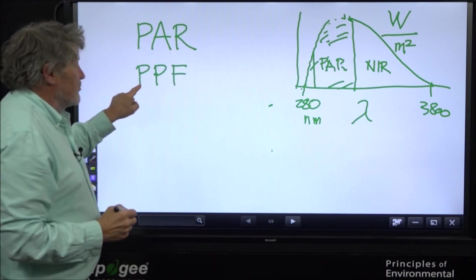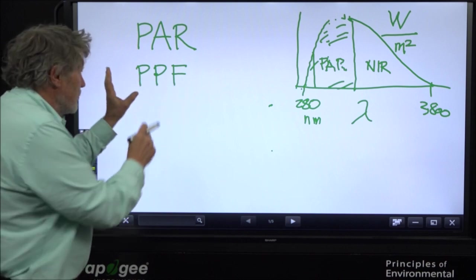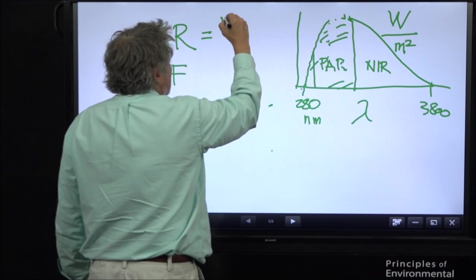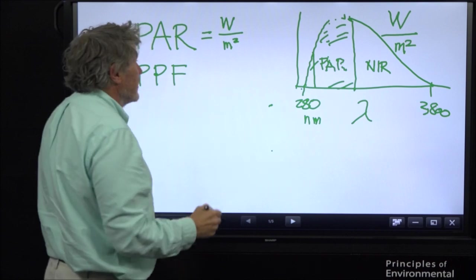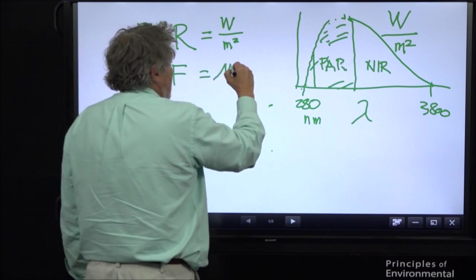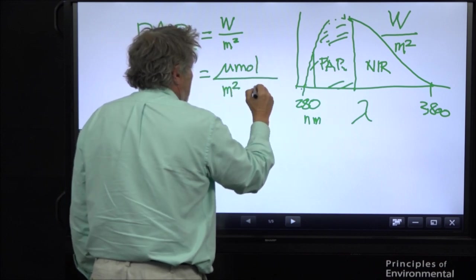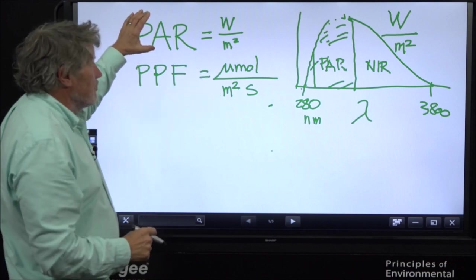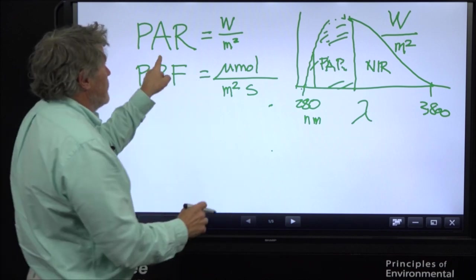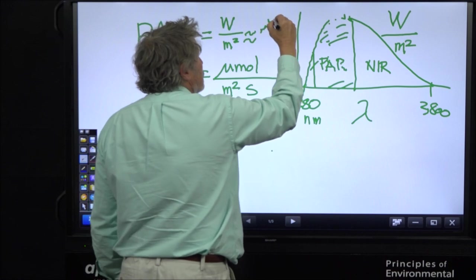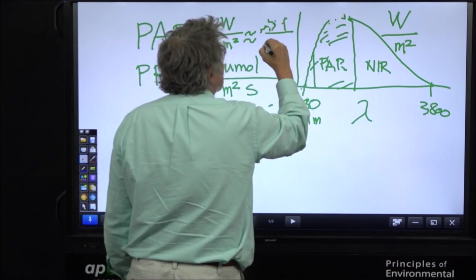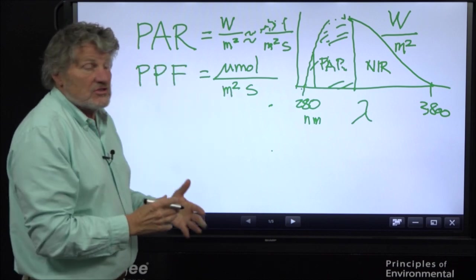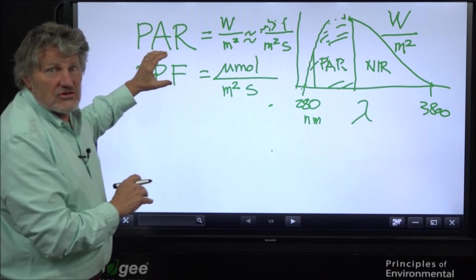This is an easy term to remember, photosynthetically active radiation. PPF stands for photosynthetic photon flux, and it's a more rigorous term. In the 1960s and 70s, PAR often meant watts per meter squared, which was not very accurate. PPF specifically meant micromoles of photons per meter squared per second. The story would end here. This is a more rigorous term for moles of photons than the old term PAR.